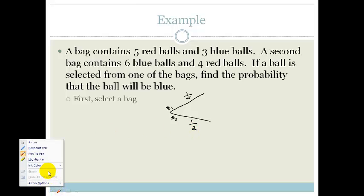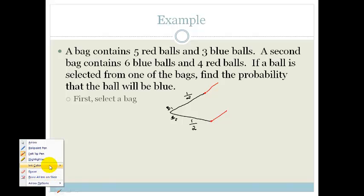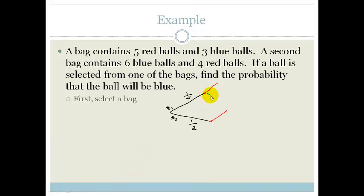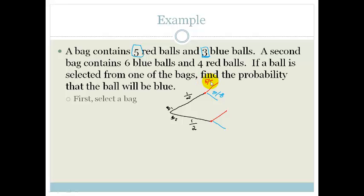At this point, from both branches we can choose either a red ball or a blue ball. Looking at the first bag: we've got five plus three balls, so eight balls in total. The probability of pulling out a blue ball is three out of eight, and the probability of pulling out a red ball is five out of eight.